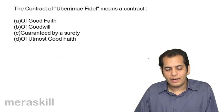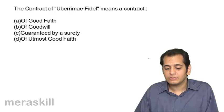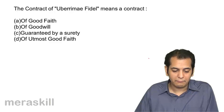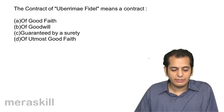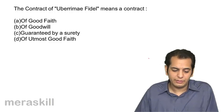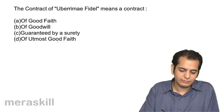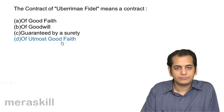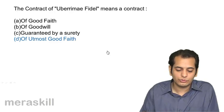The contract of Uberrimae Fidei means a contract of: A good faith, B goodwill, C guaranteed by assurity, D utmost good faith. The answer is D — utmost good faith. It is a contract of utmost good faith.